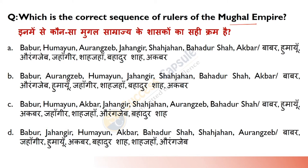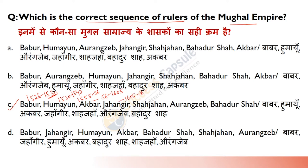Mughal Empire rulers ki correct sequence: The 1st Battle of Panipat started in 1526. Babur 1526–1530, Humayun 1530–1540 and 1555–1556, Akbar 1556–1605, Jehangir 1605–1627, Shah Jahan 1627–1658, Aurangzeb 1658–1707, aur phir Bahadur Shah I aate hain 1707–1712 tak.